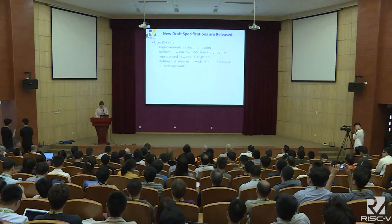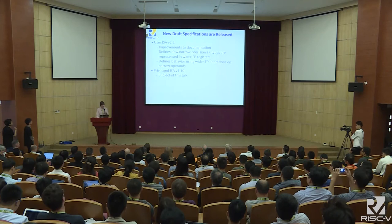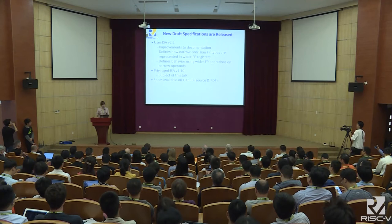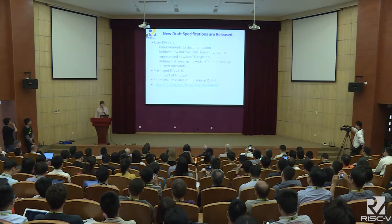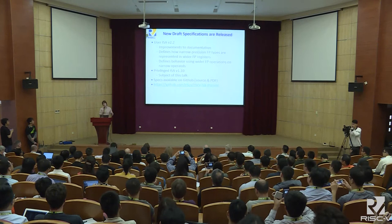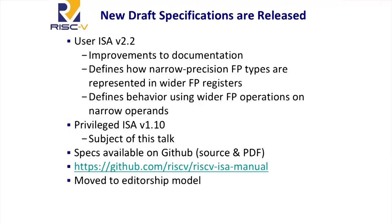We also finished version 1.10 of the privilege architecture, which is what I'm going to talk about today. The specs are now available open source on GitHub, and the compiled specifications are also in the same repo at the GitHub RISC-V file organization. We also uploaded all the previous privilege spec PDFs there. We've done our best to include in the preface a list of changes so you can clearly see what changed between 1.10 and the previous version 1.9.1. We've also changed from an authorship model to an editorship model since there have been so many contributors — now it's just Kirsten and me as editors and all of the other 30-some people in alphabetical order as contributors.